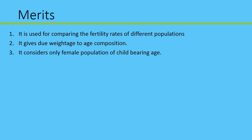Now talking about the merits of TFR. The first merit is that it is used for comparing the fertility rates of different populations. As mentioned, there are four different measures, but the first three measures cannot be used for comparing two or more different populations. If you want to compare multiple populations using fertility, then TFR is the best measure to do that.